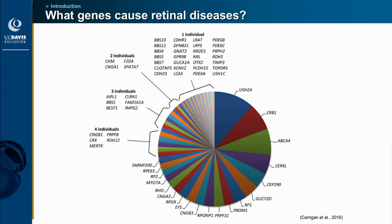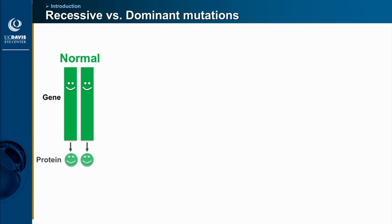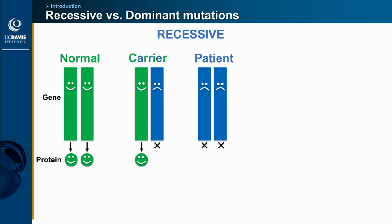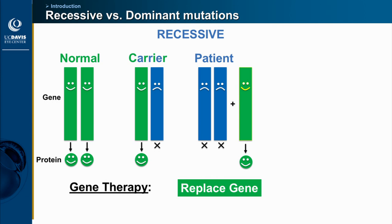This is one of the challenges with gene therapy development. To understand gene therapy versus gene editing, it's important to understand the difference between recessive and dominant mutations. All of us have two copies of every gene. For a recessive disease, you need both copies mutated to have the disease. In this situation, gene therapy works very well — you give a functional copy and can rescue the phenotype.